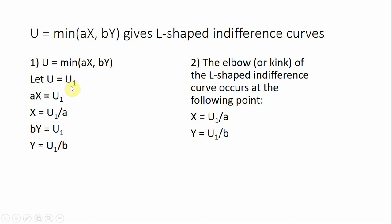I'll call that u subscript 1. What you're going to do is take whatever we have here, 2x, 3x, so in general, ax, and set that equal to u subscript 1. Then you're going to solve for x. So what you found is one point that's going to correspond on this elbow here of the L-shaped indifference curve.